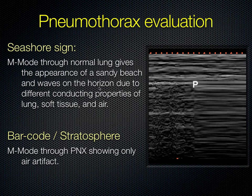The seashore sign: when the M-mode line is through that pleural line, on this half you see skin and soft tissue in striped fashion, then the pleural line, and then graininess beyond — it looks like a beach with waves coming onto it. However, when you have loss of pleural lung motion, you basically just see stripes all the way down — what we call a barcode. So pneumothorax gives you a barcode, and normal lung gives you the seashore sign.